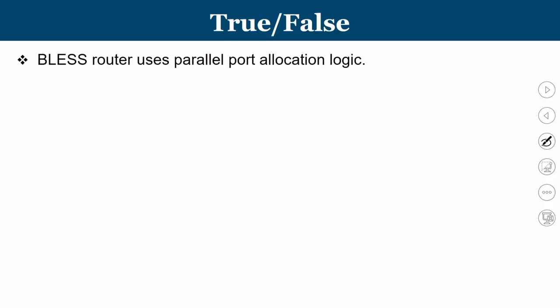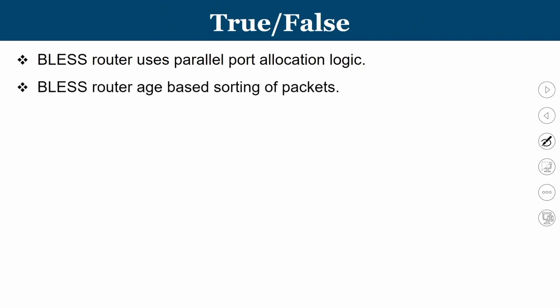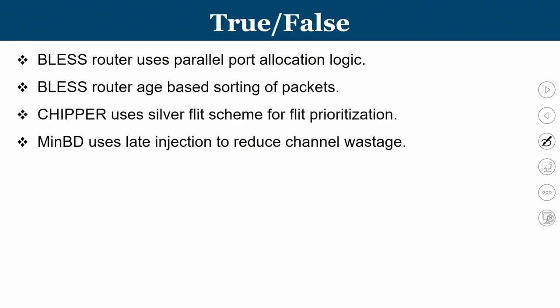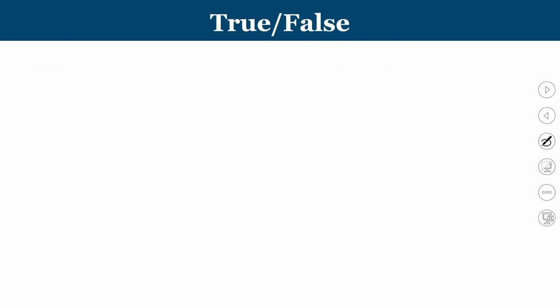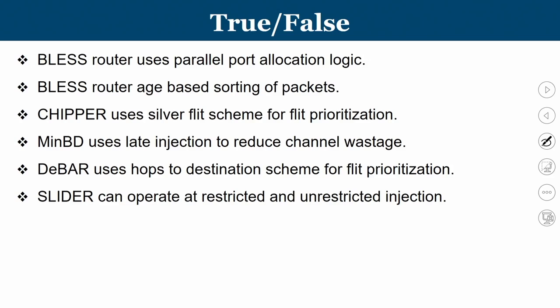Next we have true or false statements. First: BLUS router uses parallel port allocation logic. BLUS is a bufferless technique that uses flit ranking and sequential port allocation logic — not parallel. So this statement is false. Second: BLUS router uses age-based prioritization or sorting of packets. Packets are sorted based on age, so age-based sorting is correct — this statement is true.